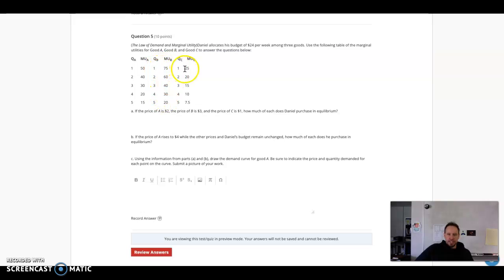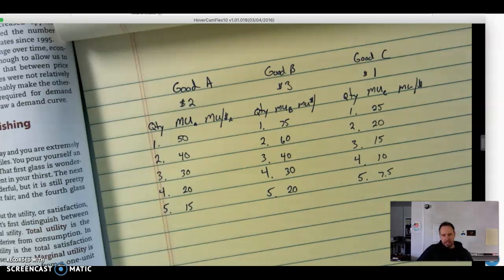We have quantity for B and quantity for C and the corresponding marginal utilities. Looking at question A: if A is $2, B costs $3, and C is $1, how much are we going to buy of each?